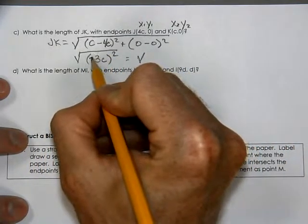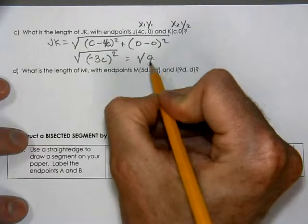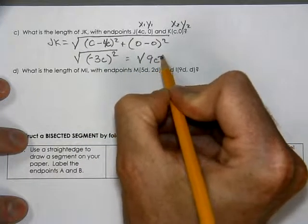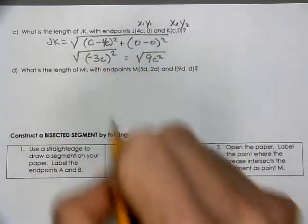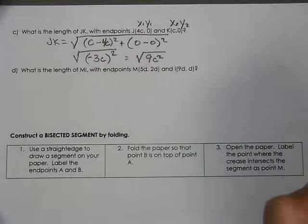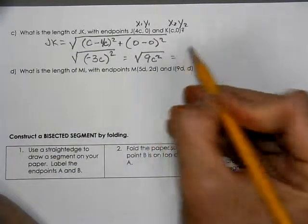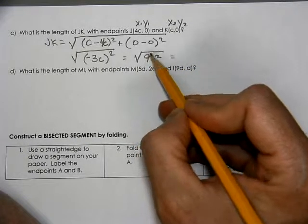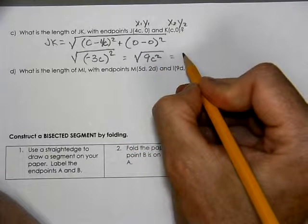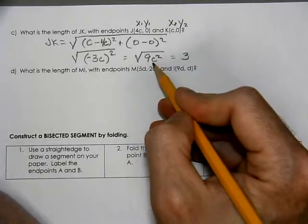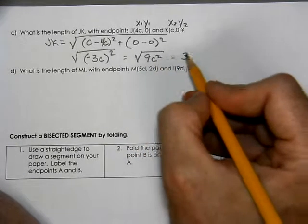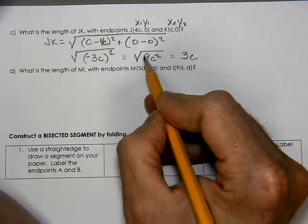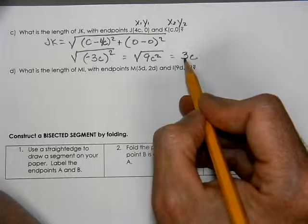You would square the negative, square the 3, square the C. Remember, you would square each part of the things inside the parentheses. Now, can you break this up into two equal pieces? 3 times 3 makes 9, so the square root of 9 is 3. C times C makes C squared, so the square root of C squared is C. Therefore, the square root of 9C squared is just 3C.